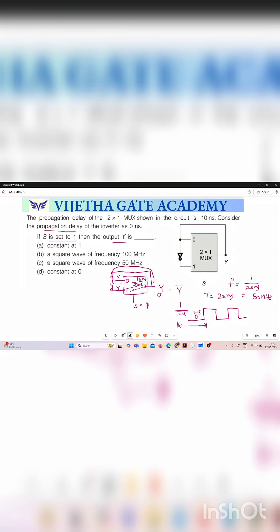So the correct option is the output of this mux is a square wave of frequency 50 megahertz. So option c is the correct answer.